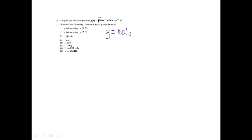Problem 22. Let g be defined by g(x) equals the given integral. Which statements about g must be true? Since g is increasing when g prime is positive, I apply the Fundamental Theorem of Calculus: g prime equals 100(x squared minus 3x plus 2) times e to the negative x squared, set equal to zero. Since e to the negative x squared is always positive, I only need to factor x squared minus 3x plus 2, giving critical values x equals 1 and x equals 2.